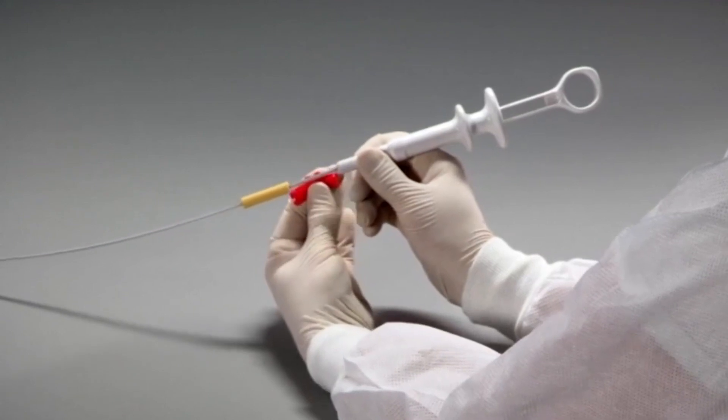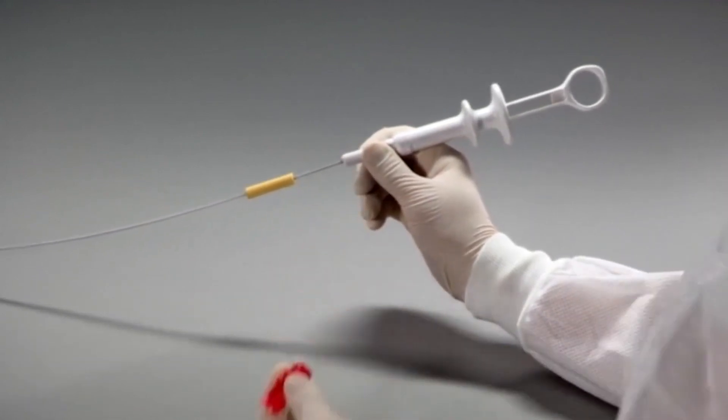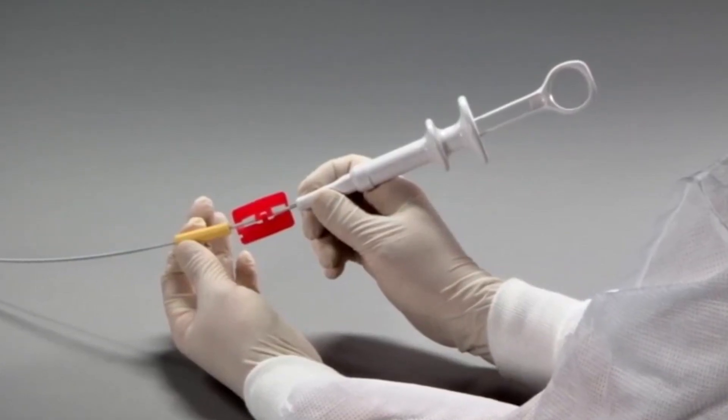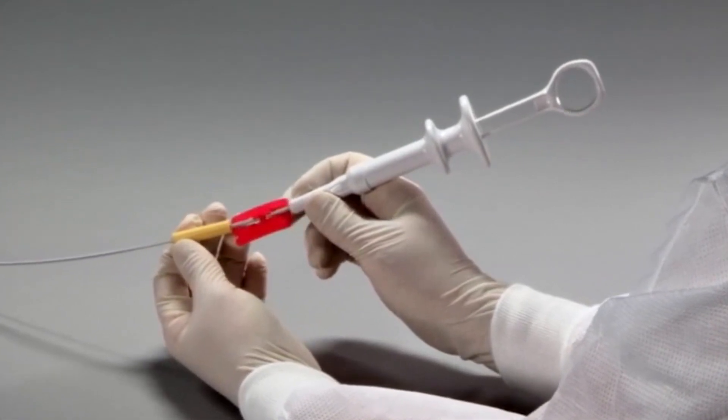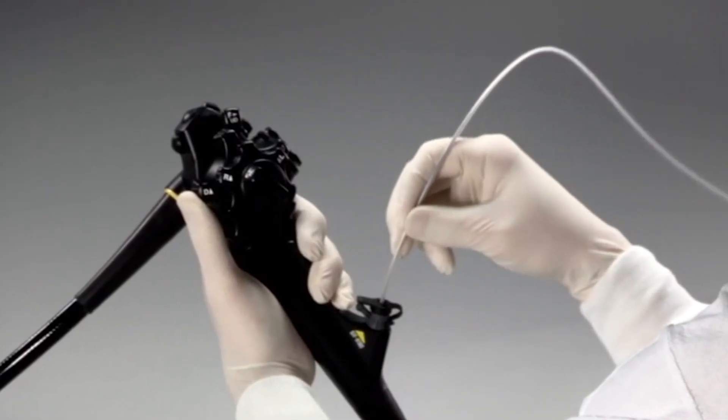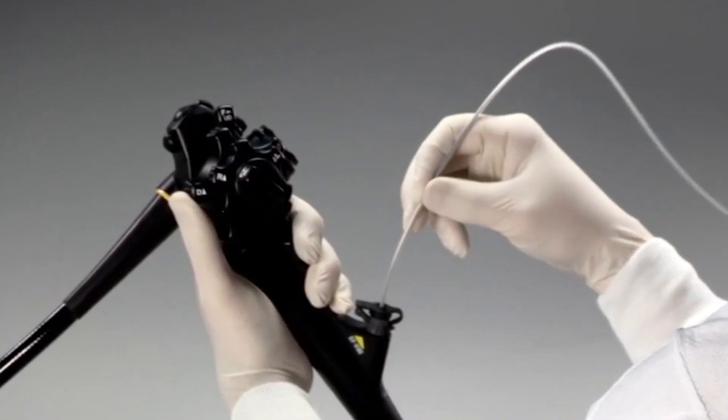Now remove the red stopper and dispose of it appropriately. Please note that the red stopper prevents the clip from extending out of the plastic sheath during the insertion process potentially causing damage to the scope channel.